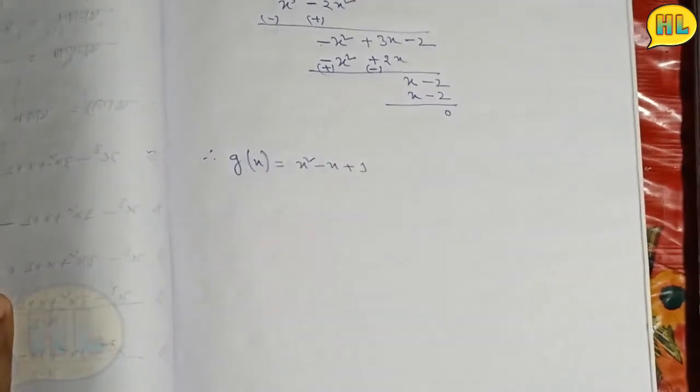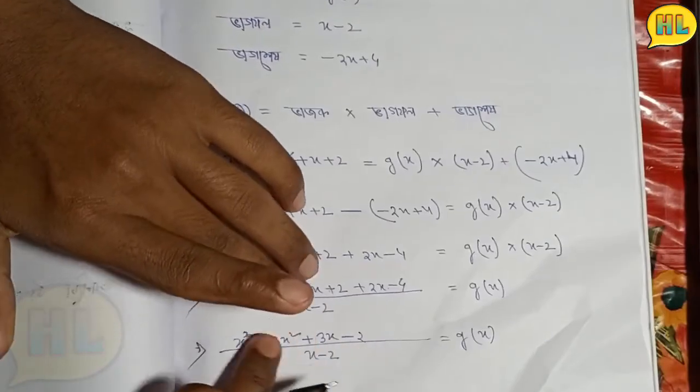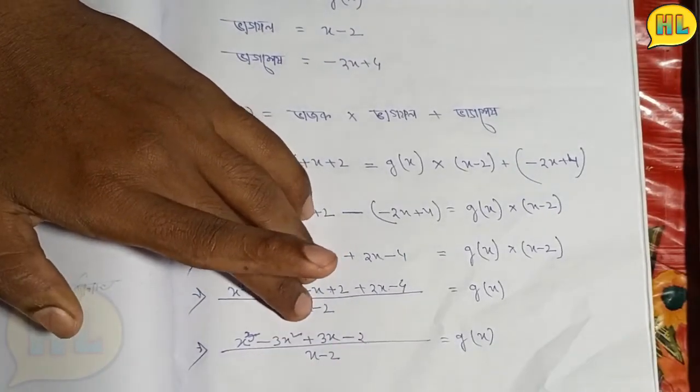So this is the answer. g(x) equals 1, which is x square minus x plus 1.